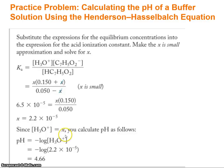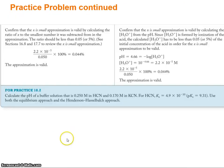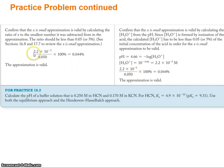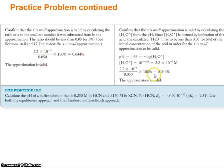We can compare the two methods — pH was 4.66 in both cases. To check the x is small approximation: 2.2×10⁻⁵ divided by 0.05 times 100 gives 0.044%, so our approximation is very valid.